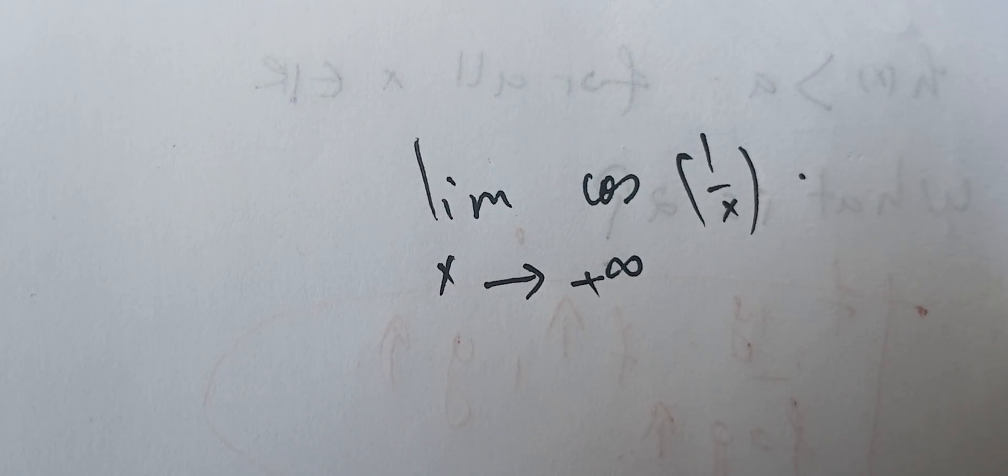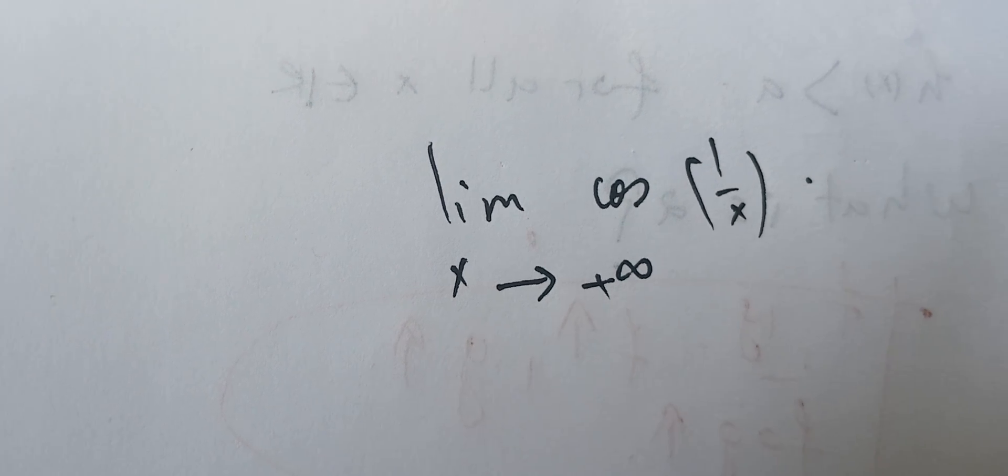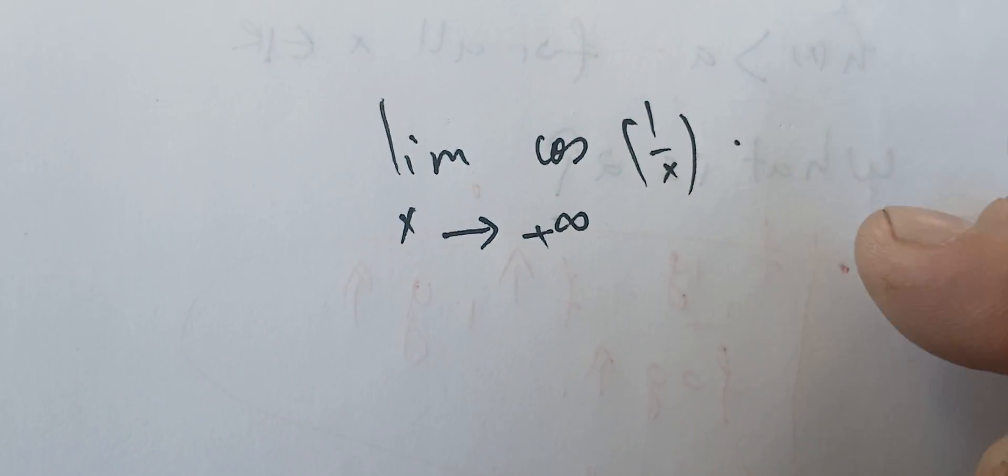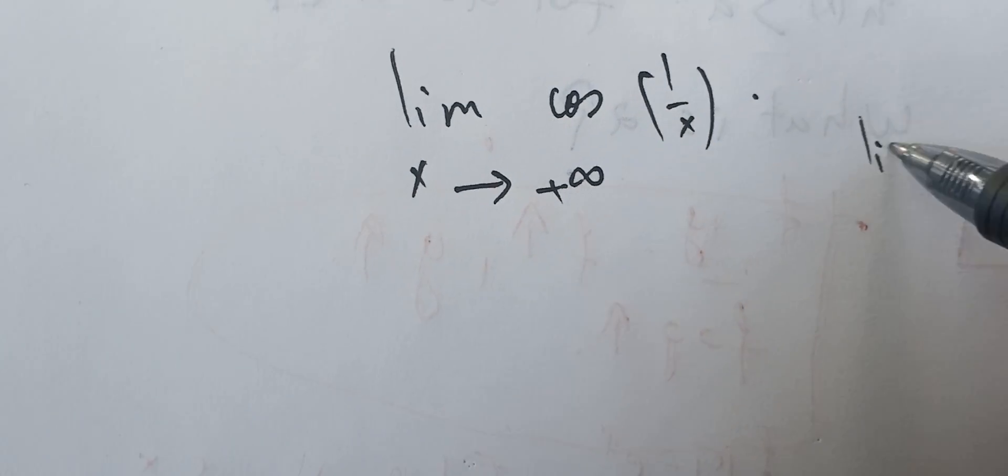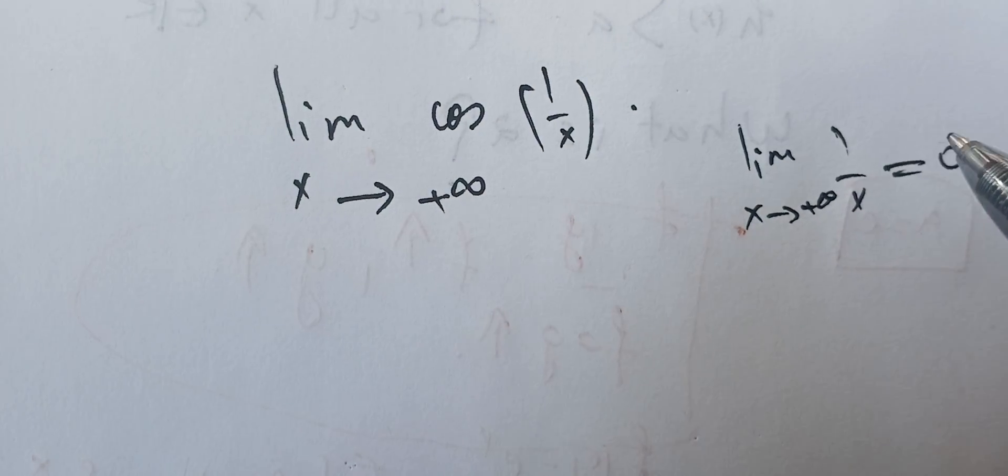of bigger values and see what happens. You can do that, or we can use the fact that the limit of 1 over x is 0 as x goes to plus infinity.